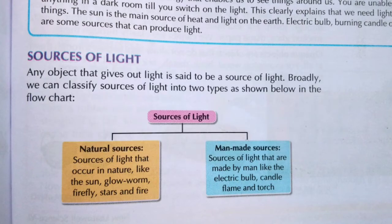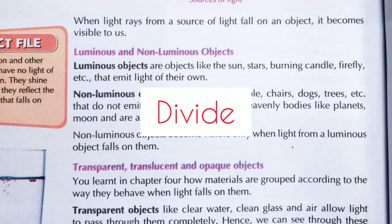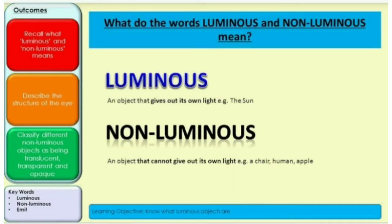Based on the ability to emit light, we can divide objects into two types. Emit means to produce or discharge. According to the ability to emit light, objects are classified into two categories: luminous objects and non-luminous objects.